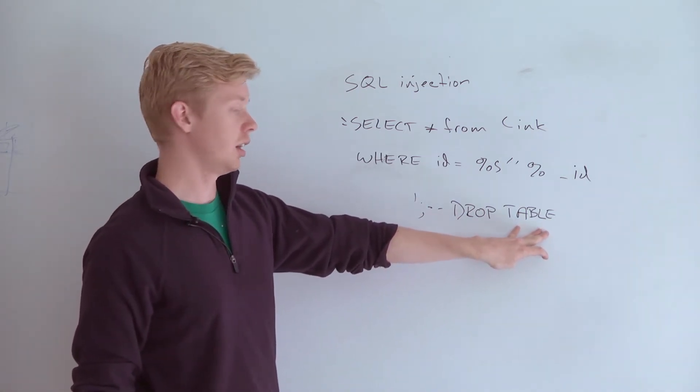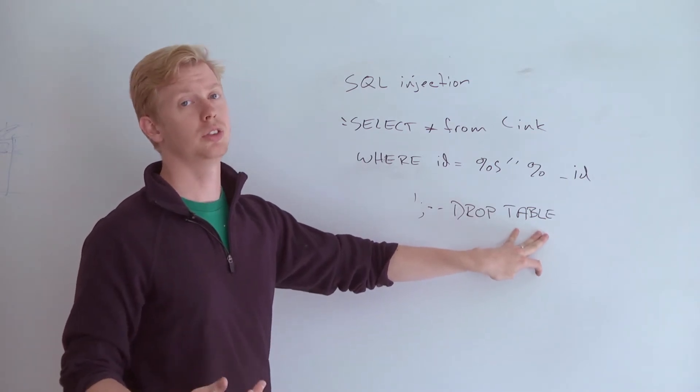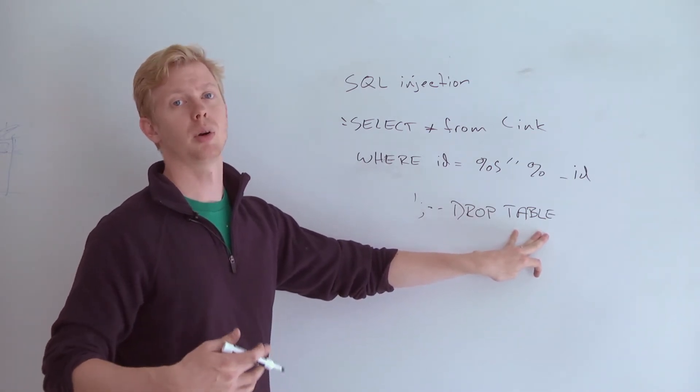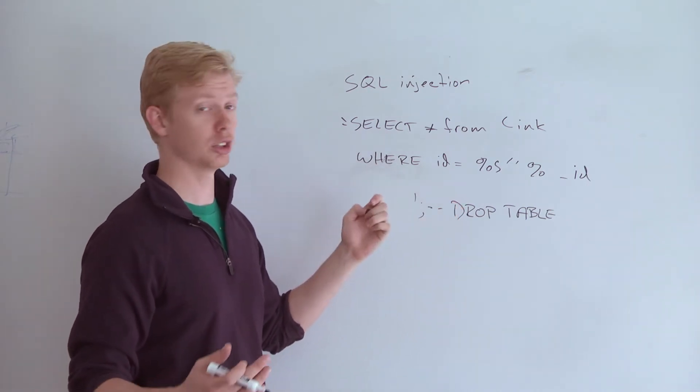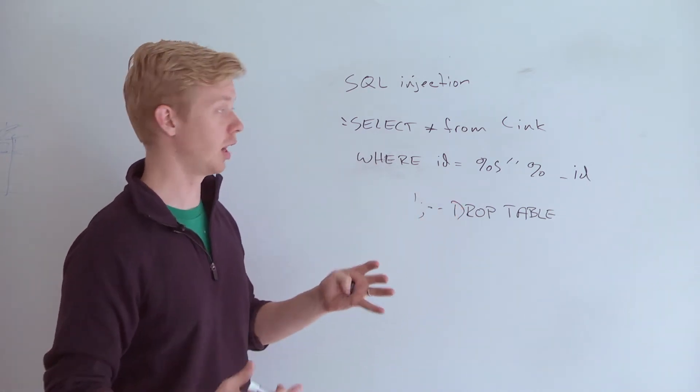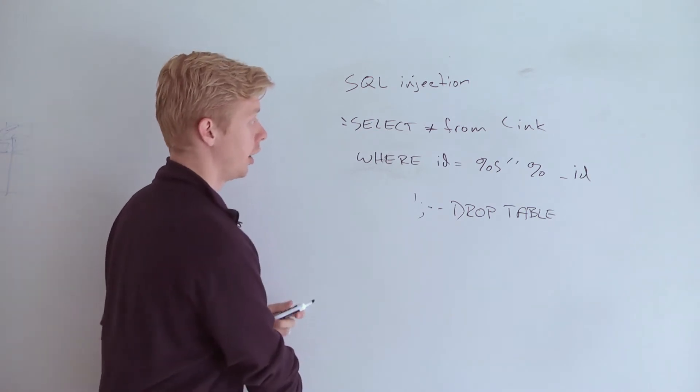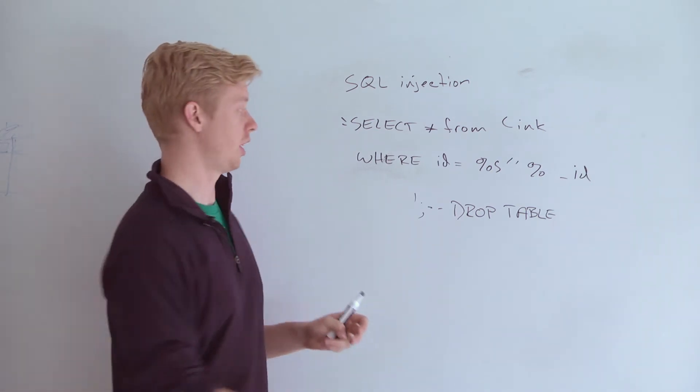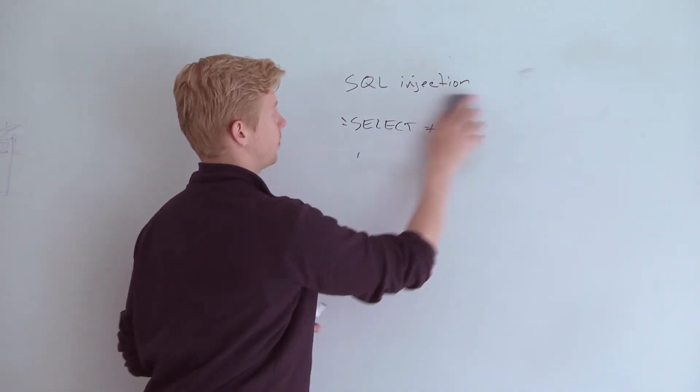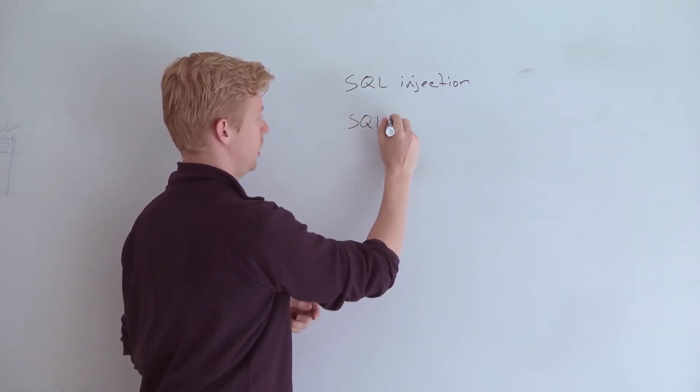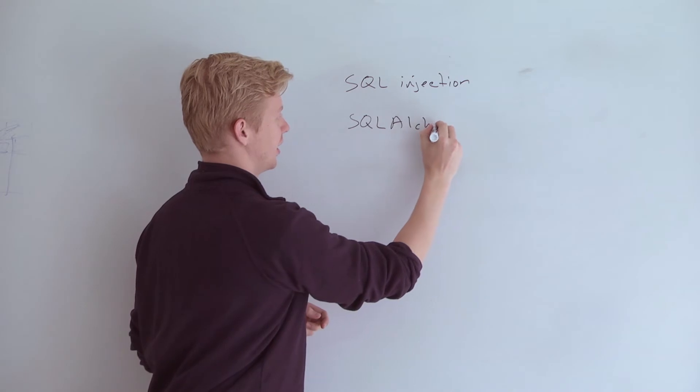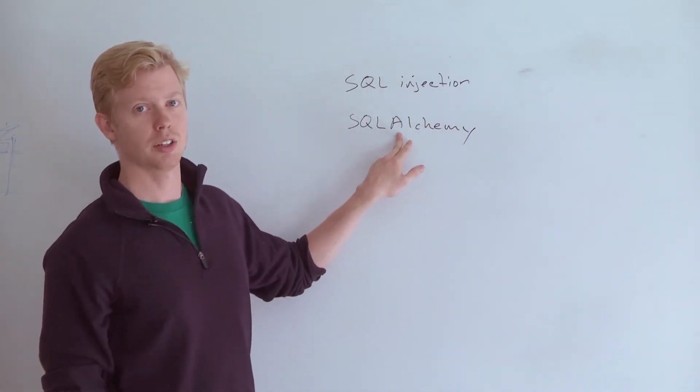So generally, you want to make sure you're always using a wrapper around your SQL. So App Engine provides that using their GQL query object that we've been using in this class. Another really popular library I use all the time in Python is called SQLAlchemy. It is spelled like this, maybe.